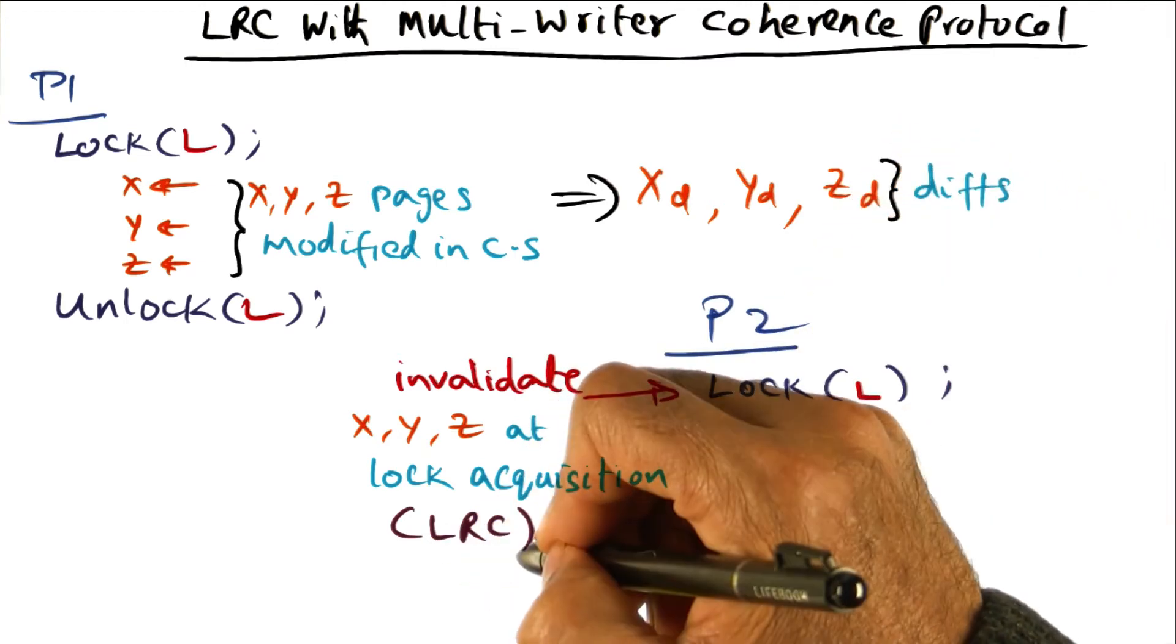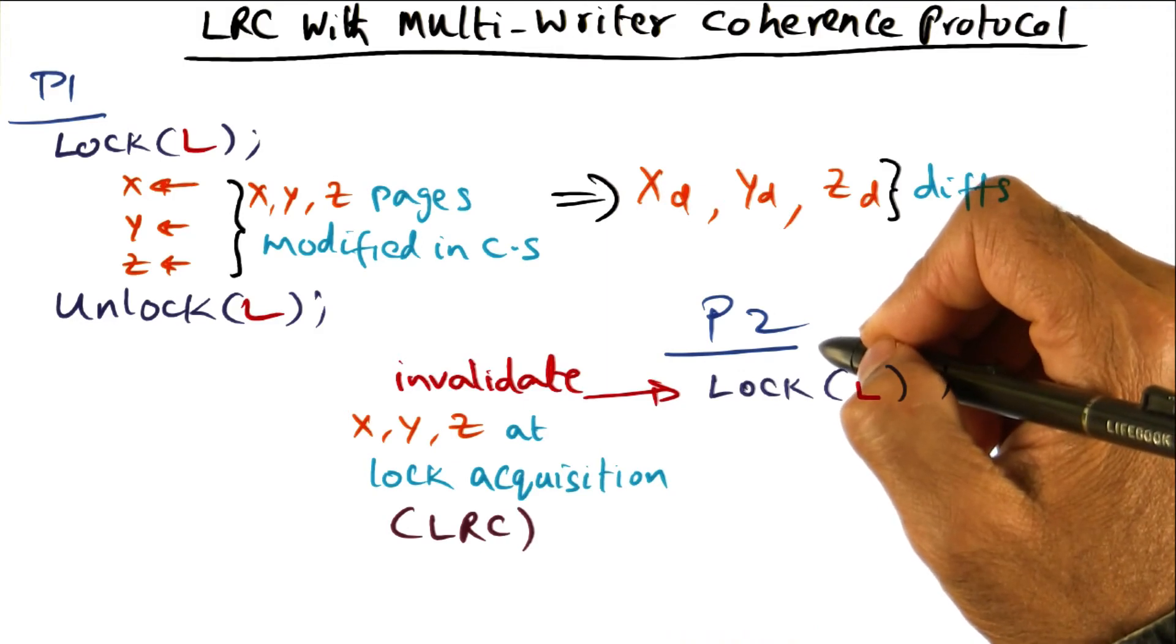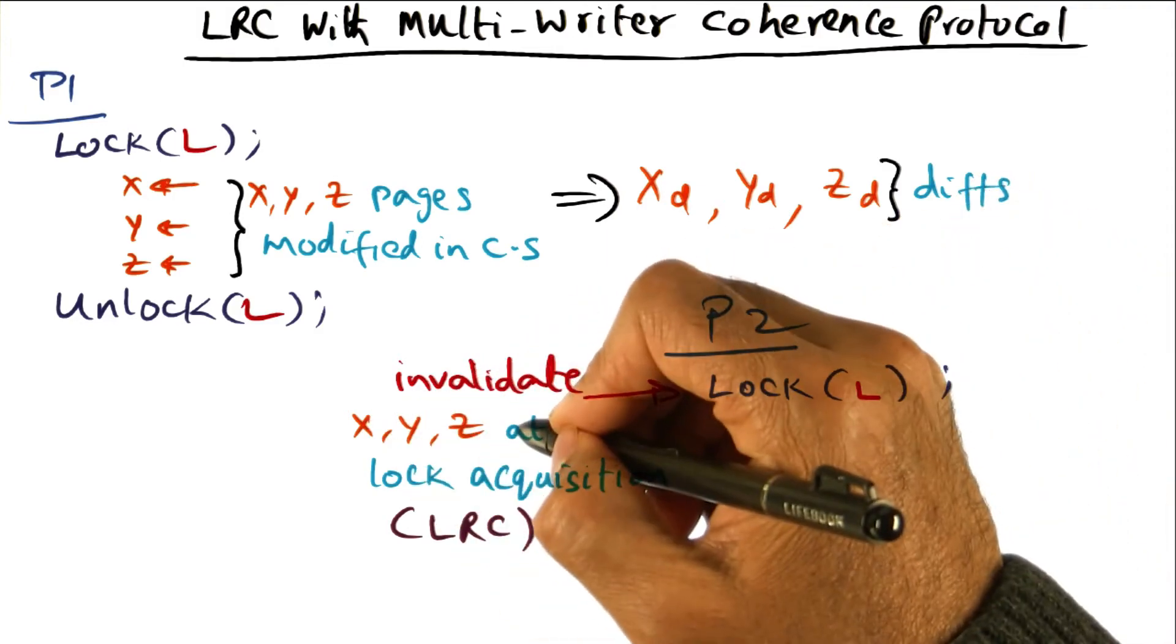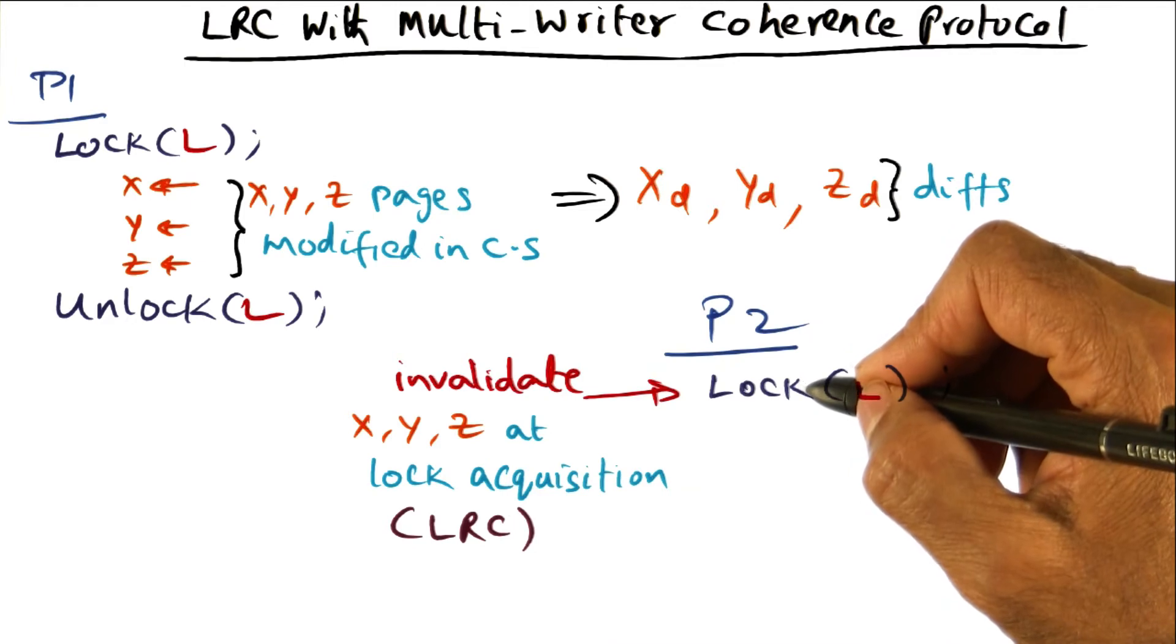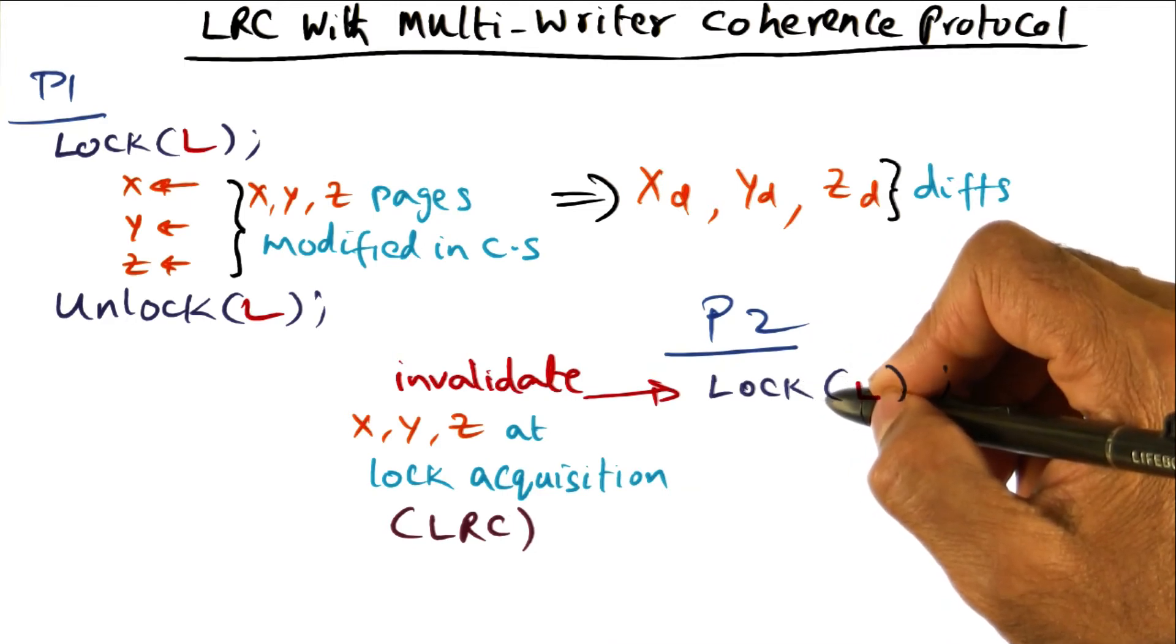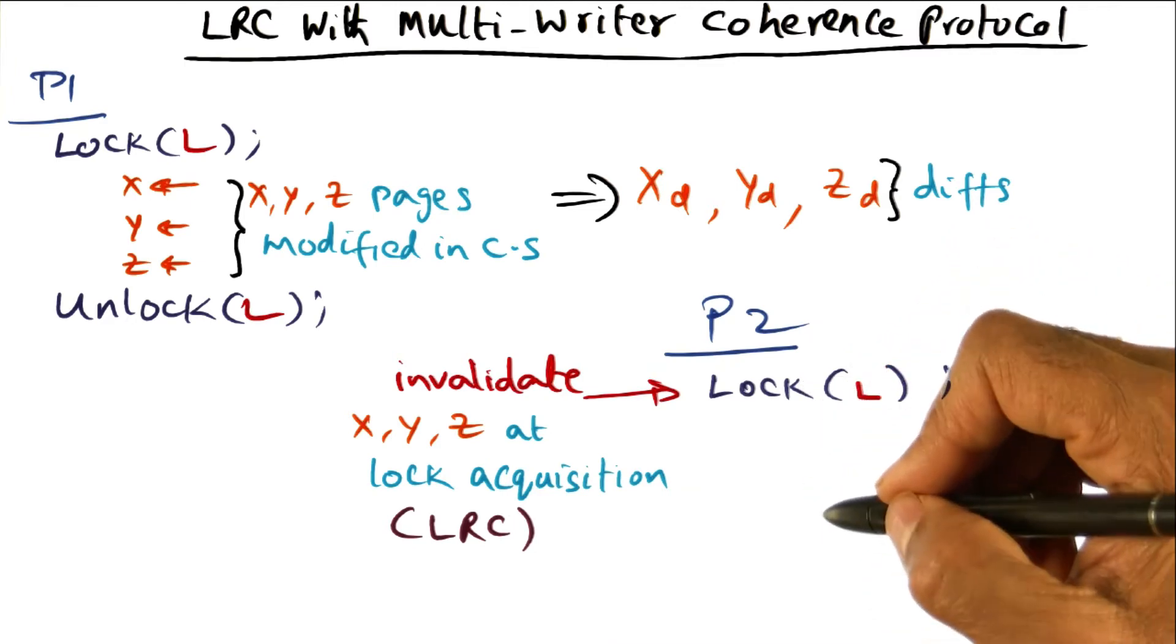That's consistent with the lazy release consistency model. So once we've invalidated these pages, then you can allow this guy to get the lock and start getting into its critical section.